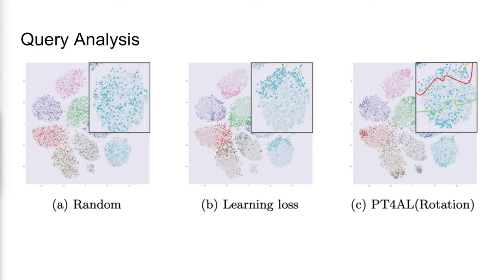Shown are the T-SNE embeddings of CIFAR10 data points. The bold points denote the queried data. Random sampling queries data uniformly across the feature space, whereas learning loss, an uncertainty-based method, queries on the decision boundaries.